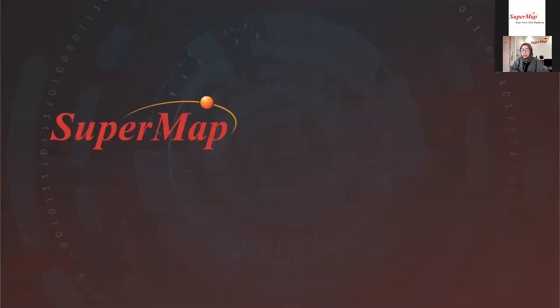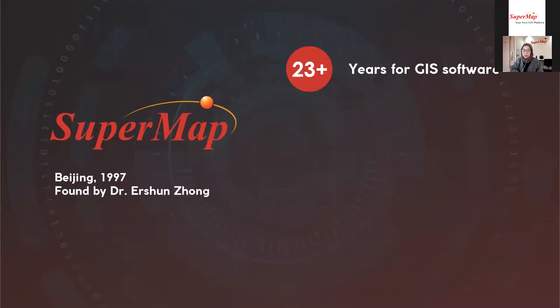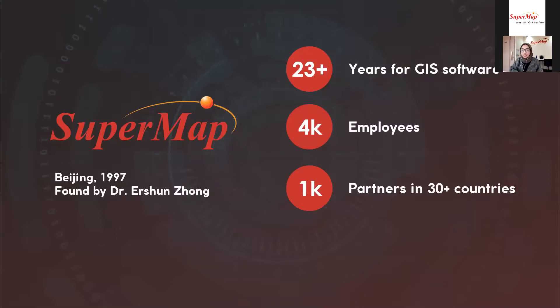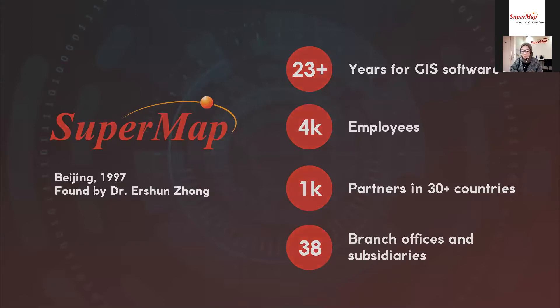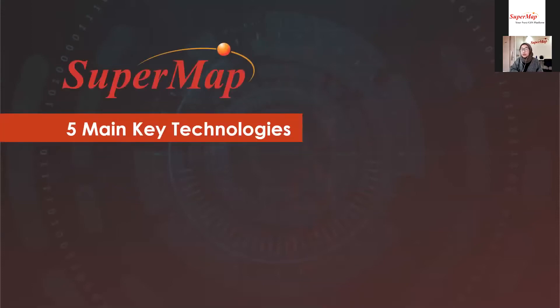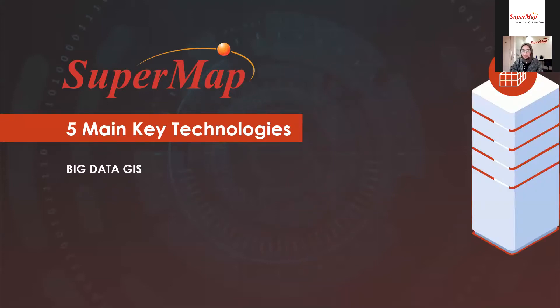SuperMap was founded in Beijing in the 1990s by Dr. As well, and for approximately 23 years we have helped humans in solving various problems with GIS as the main foundation. We have about 4,000 employees all around the world, more than 1,000 partners coming from more than 30 countries, and we also have 38 branch offices and subsidiaries. There are five of our main key technologies that are the basis for solving spatial problems using the SuperMap platform.